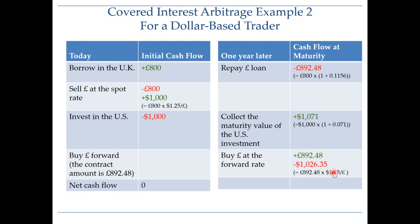You take those pounds and deliver them to pay off your pound loan. The net cash flow from this set of transactions is $44.65 — in other words, you've just made a profit of $44.65. This is guaranteed profit because we are considering only default-free securities, and you have no exchange rate risk since you entered into a forward contract. So you essentially have a riskless profit.